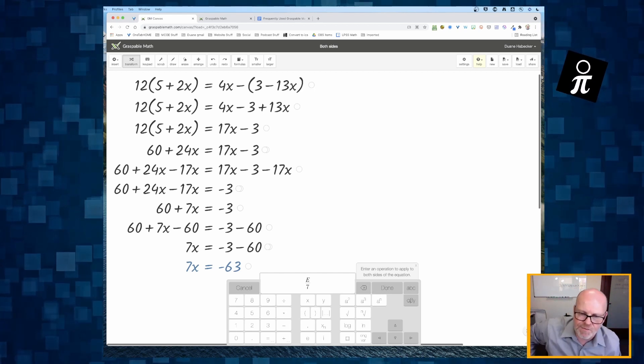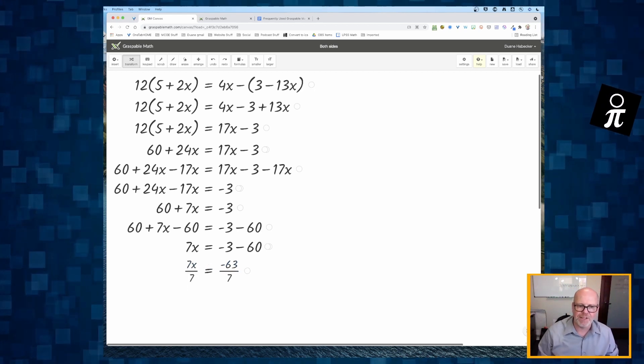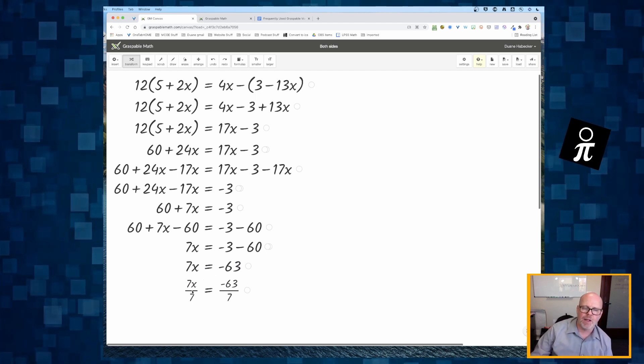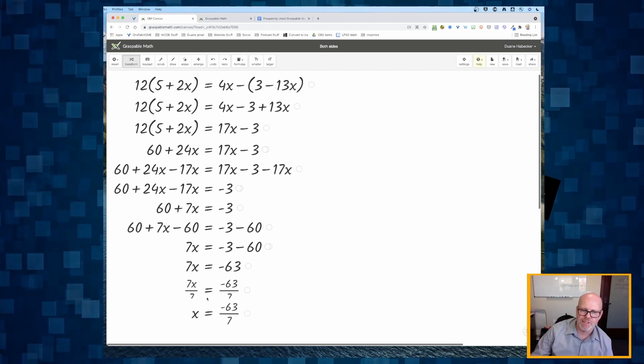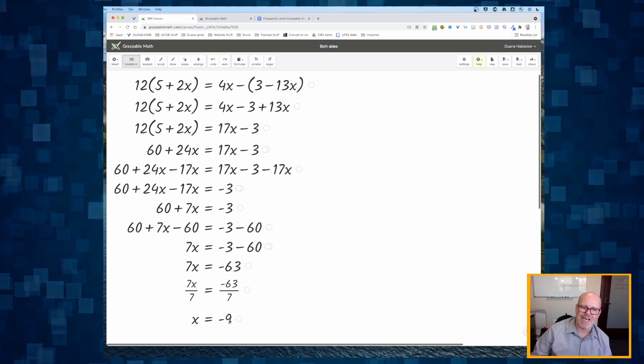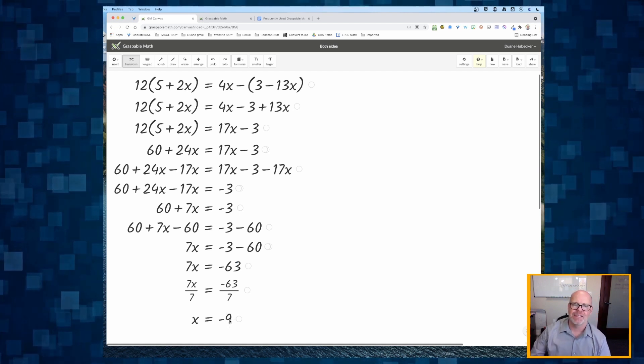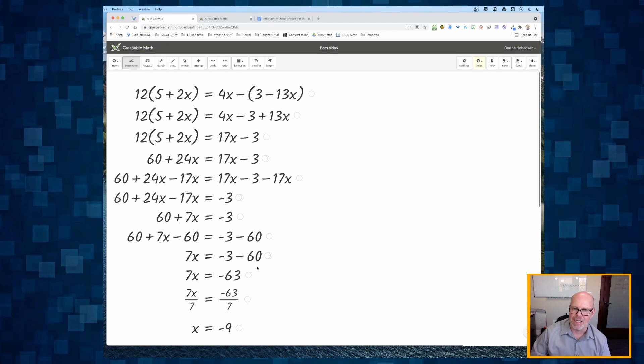And then I'm just going to do divide by 7. So it's going to divide both sides of the equation by 7. And then all I have to do is click the division symbols to simplify both sides. And I get x is equal to negative 9.